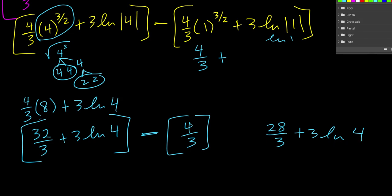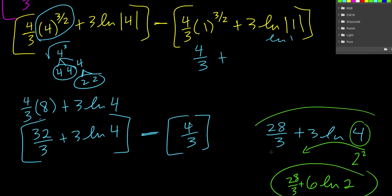Your book takes it one step further for some reason. Not sure why they do it, but I'll just show you what they did. They think of this like 2 squared. And then they bring the 2 out in front and multiply it by the 3. So it's 6 natural log of 2. And 28 thirds is added to that. I'd probably leave it as that blue answer right there. But if you want to see exactly what the book got and how they got it, that's what they did.